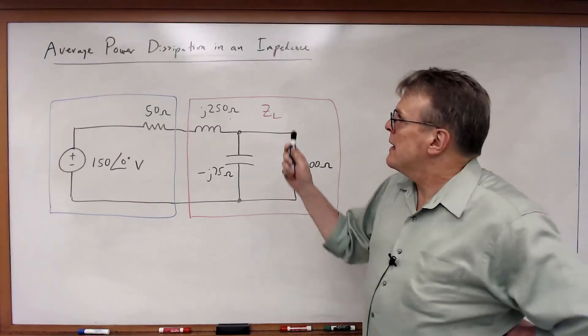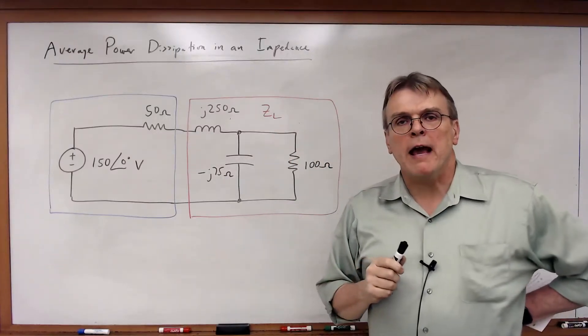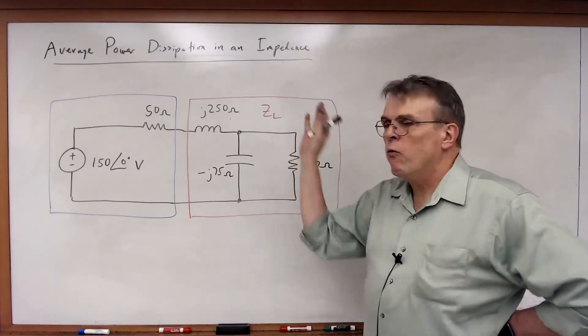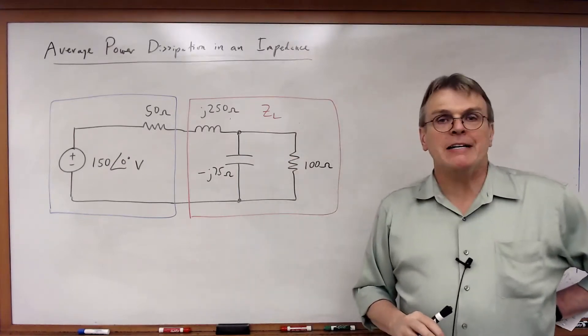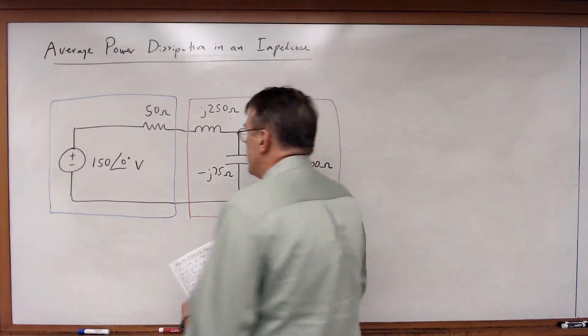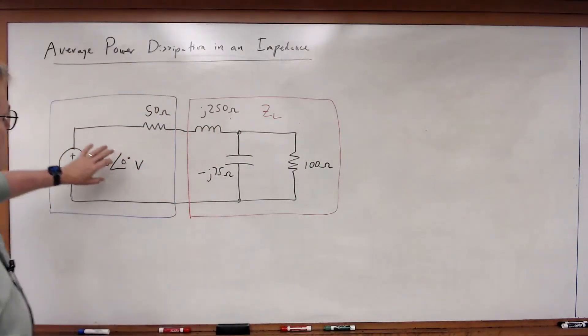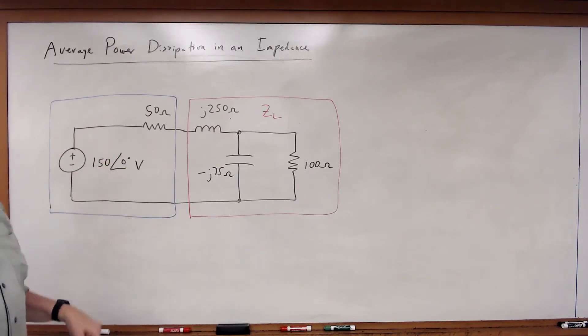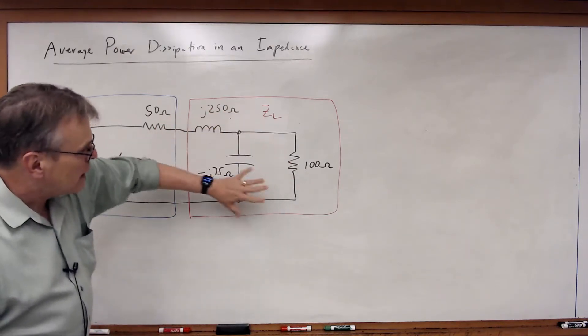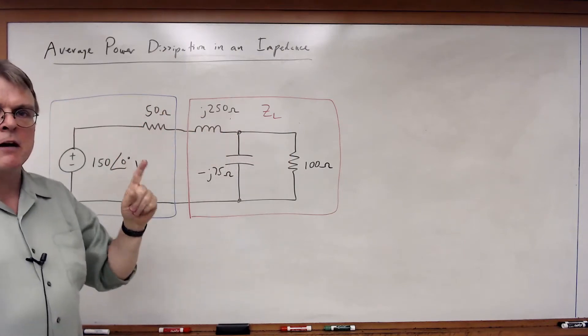Now let's look at how we can calculate the average power dissipation for any type of load or any type of circuit. In this case, I've got a circuit where part of the circuit I'm representing as a Thevenin equivalent circuit with a source and a resistance.